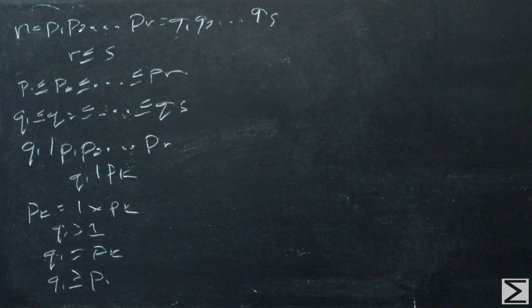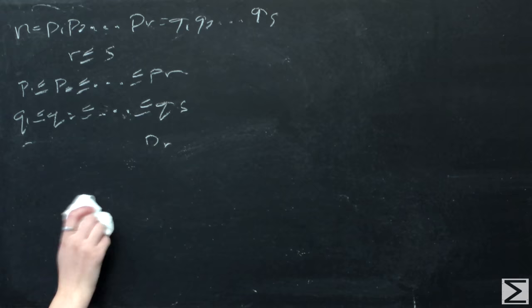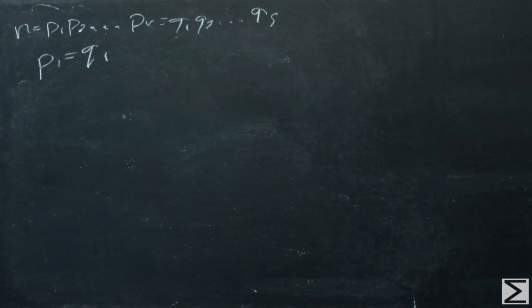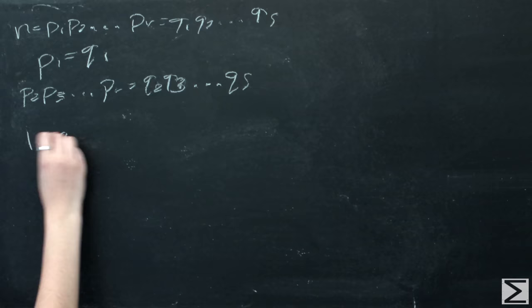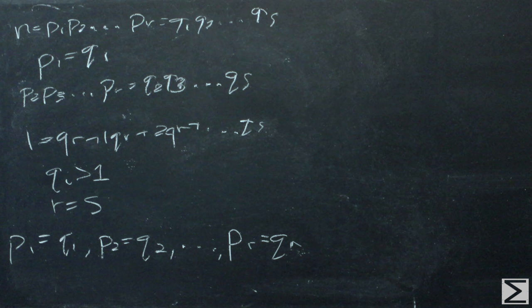We can see from both of these results that p1 must equal q1. If we cancel out each common factor, continually using these results, we should arrive at 1 equals qr+1, qr+2 until qs, because of the inequality that r is less than s. But this is impossible since we know that q1 is greater than 1. This is a contradiction, so r must equal s, meaning that the two factorizations of n are actually identical.